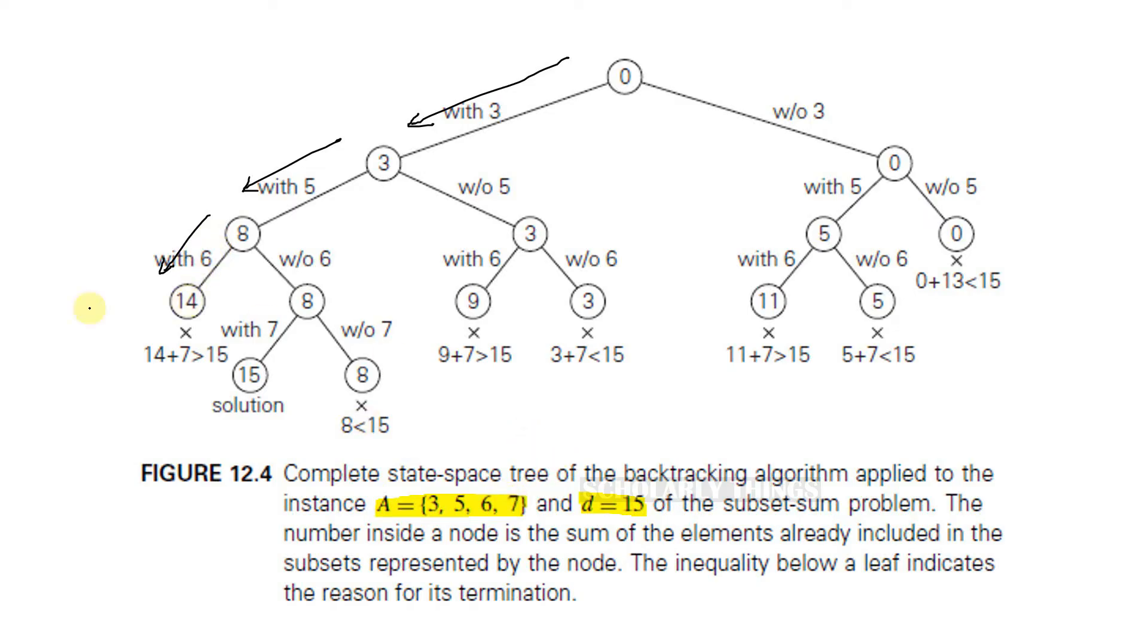Next element is 7. But if we add 14 and 7, the sum will be greater than 15. So we don't want that. So stop this path over here and backtrack to its parent node.